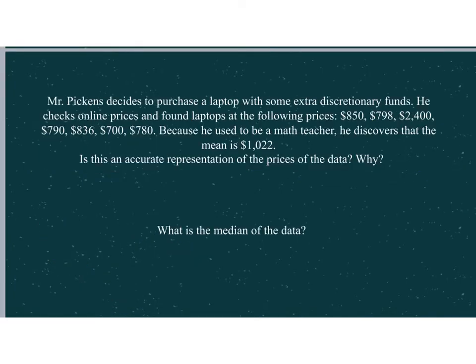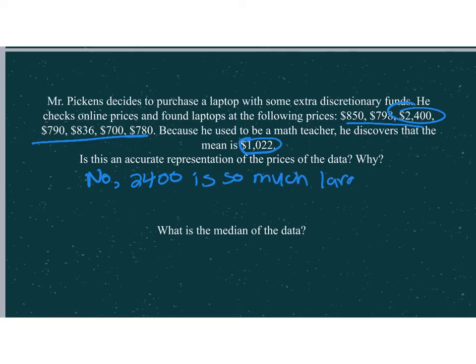Another way of doing this is using the median. It says that Mr. Pickens decides to purchase a laptop with some extra discretionary funds. He checks online prices and found laptops at the following prices: $850, $798, $2,400, $790, $836, $700, and $780. Because he used to be a math teacher, he discovers the mean is $1,022. Is this an accurate representation of the data? Does this accurately represent the data? Well, look at this number right here. If that's the mean, if we look at our other numbers, a lot of our numbers aren't like that. So I'm just going to say no. And the reason for that, this $2,400 is so much larger than any other laptop price. So what that's doing is it's skewing our data. It's making it so that our mean is larger than it should be.